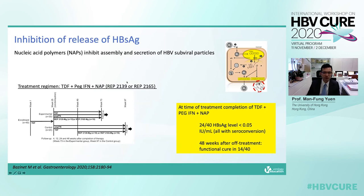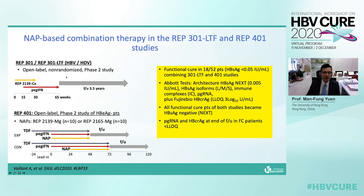Here comes the surface antigen release inhibitor. Treatment with tenofovir plus pegylated interferon plus nucleic acid polymers for more than 48 weeks brought 24 out of 40 patients to achieving functional cure at the end of therapy, maintained in 14 patients at 48 weeks after stopping therapy. With further follow-up and combining more cohorts, functional cure was observed in 18 out of 52 patients. Using a 10-fold more sensitive surface antigen assay, all 18 patients still had undetectable surface antigen, and all had unquantifiable HBV RNA and HBcrAg.